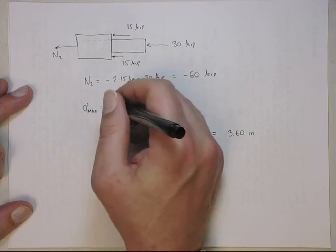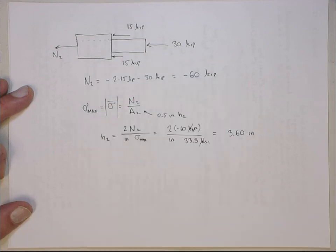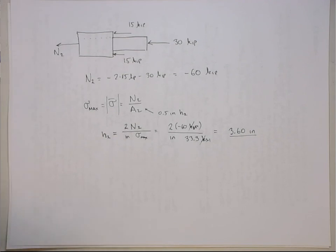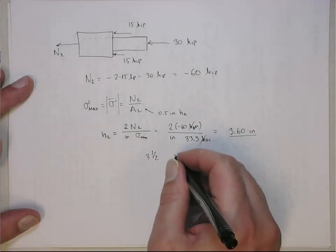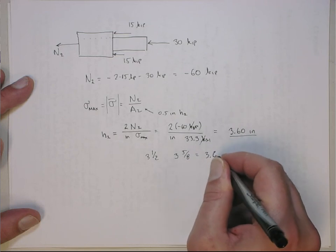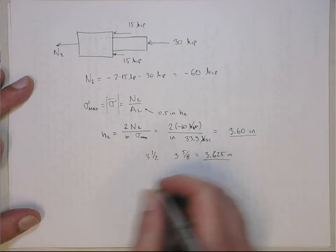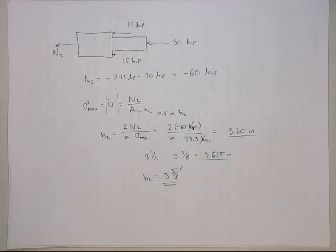We should really note this uses the absolute value since we're assuming failure in compression and tension occurs to the same degree. Now we've got to round off to the highest eighth of an inch. Three and a half is 3.5, and the next eighth increment above 3.60 is three and 5/8, which is 3.625 inches. So H2 should be three and 5/8 inches.